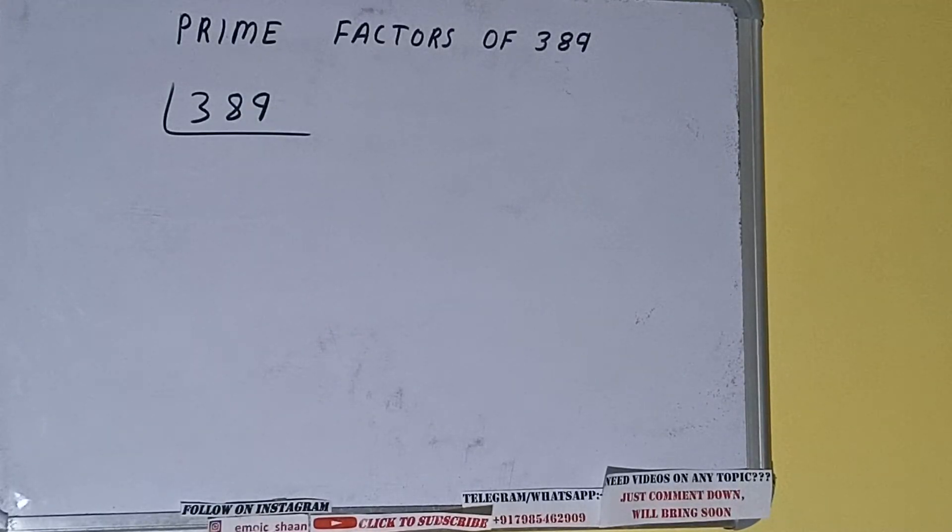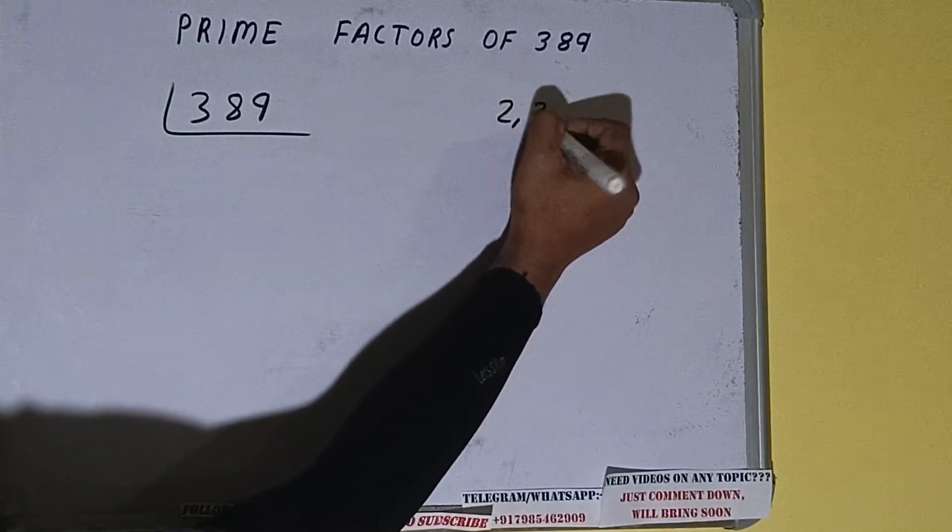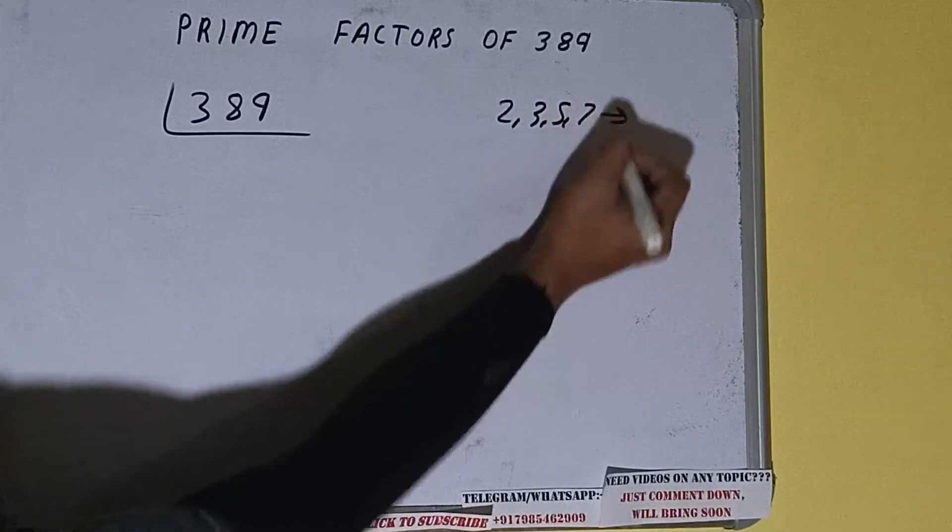So prime numbers are numbers that are divisible by 1 and the number itself, like 2, 3, 5, 7, and so on.